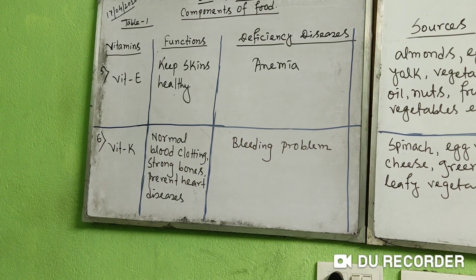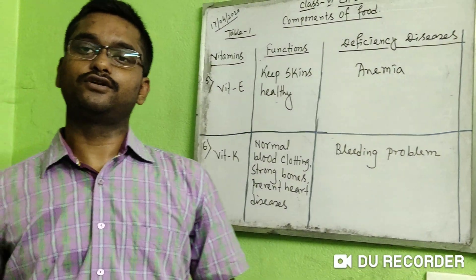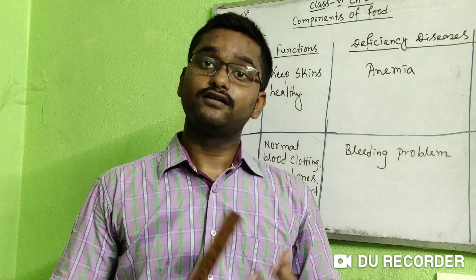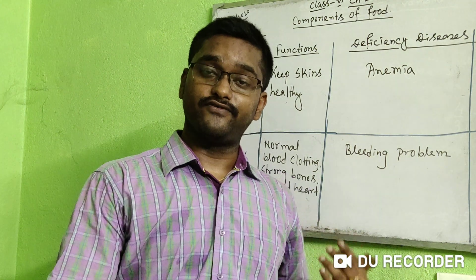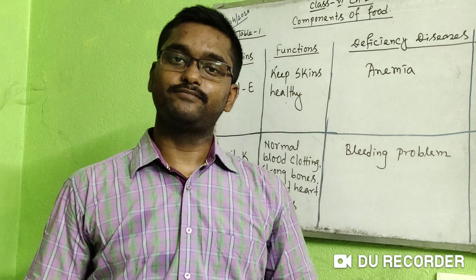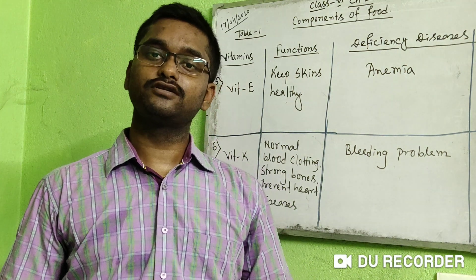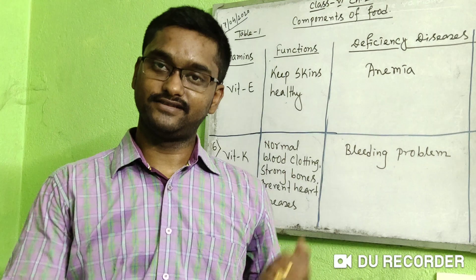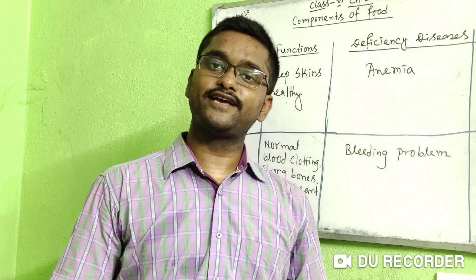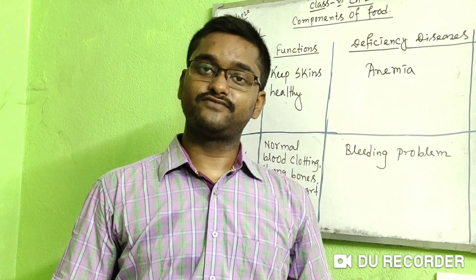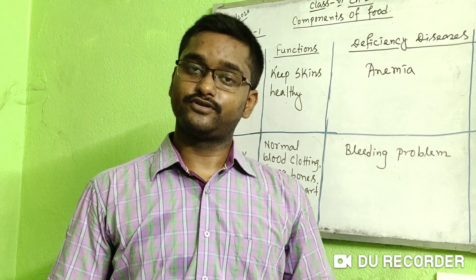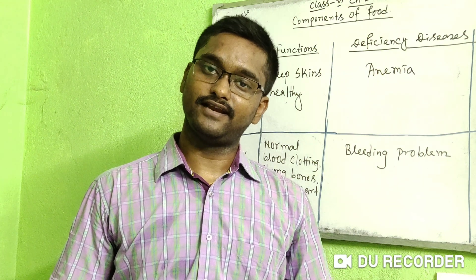So today we covered the table for vitamins — their functions, sources, deficiency diseases, and symptoms. Wait for my next class where you will learn about minerals and their table, which will also have five columns. Try to memorize this table as it is very beneficial for your exams and your knowledge. Thank you, wait for my next class.